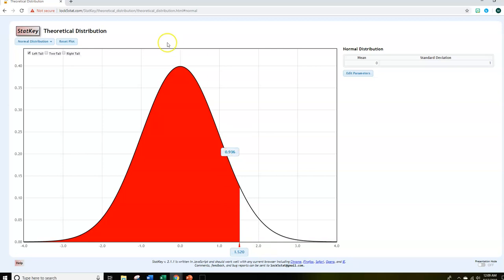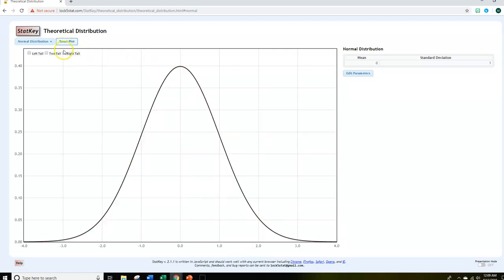If you wanted to find above, you would almost think you could just come up here and click right tail. But when I do that, it actually starts me out at a different value. It's kind of got these automatic cutoffs. So you may just have to reset plot, click on right tail.